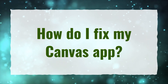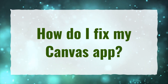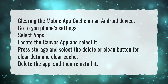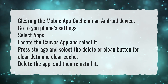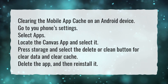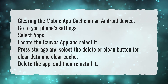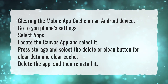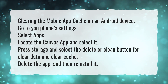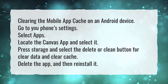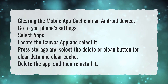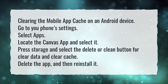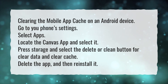How do I fix my Canva app? Clearing the mobile app cache on an Android device: go to your phone Settings, select Apps, locate the Canva app and select it. Press Storage and select the delete or clean button for clear data and clear cache. Delete the app and then reinstall it.